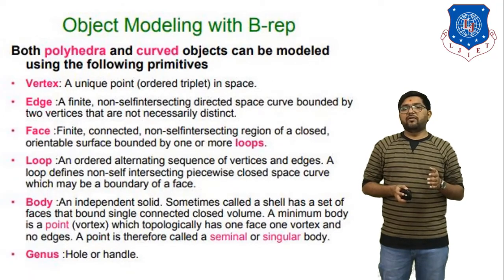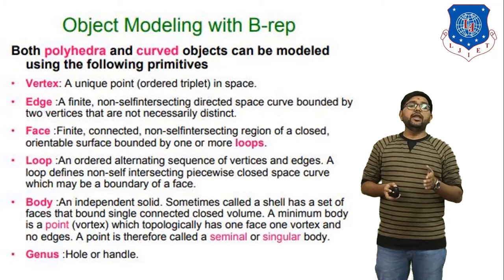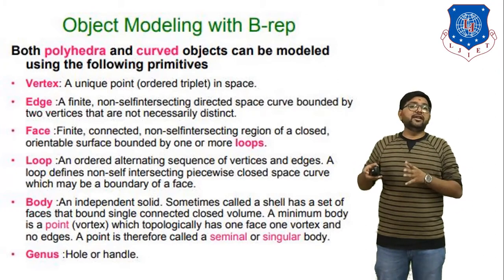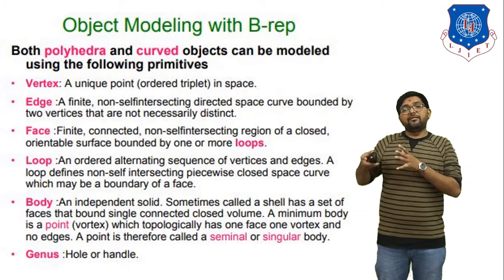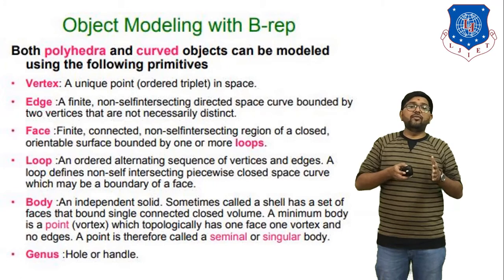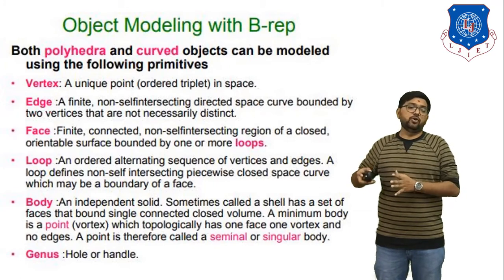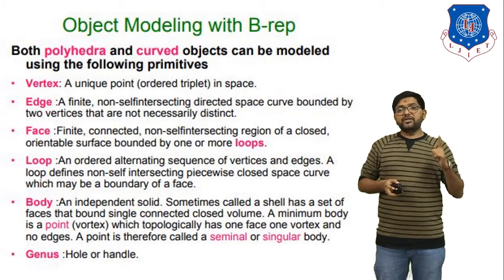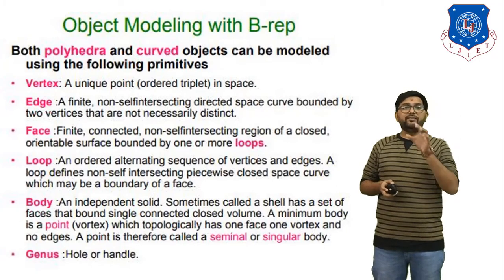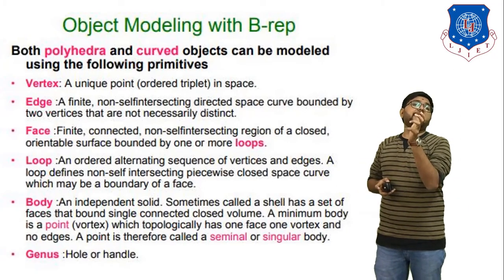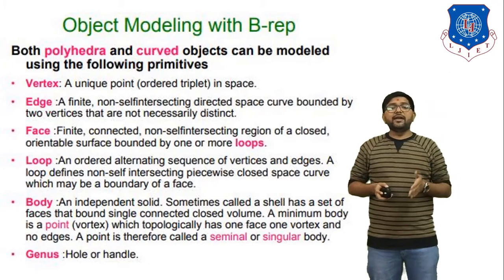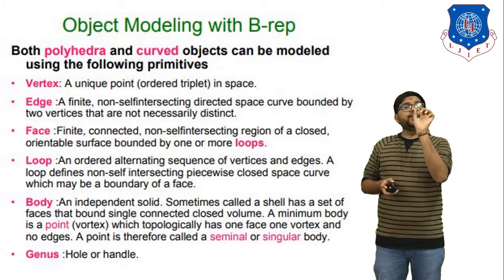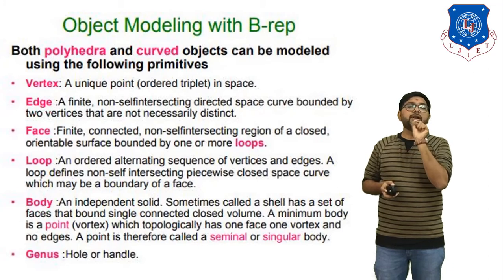This is the input information of the boundary representation. Now, object modeling with boundary representation. We have to understand this theory by considering one object: a cube. Both polyhedra and curved objects can be modeled using the following primitives. The first primitive is a vertex. A vertex means if we have one cube, that cube has eight vertices. A vertex is a unique point in space, or an ordered triplet in space — we define the coordinates of that particular vertex.